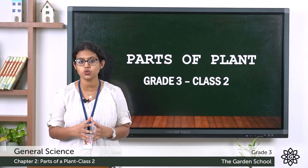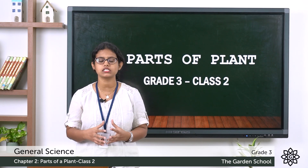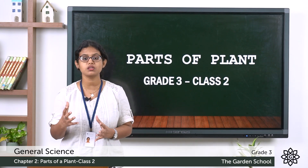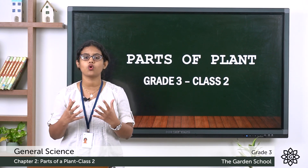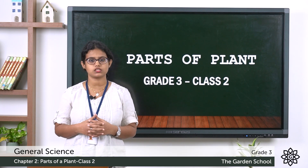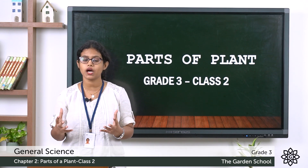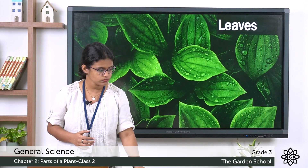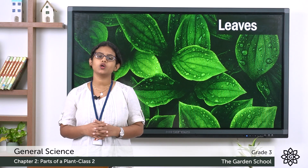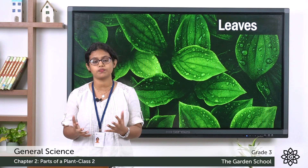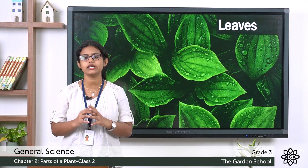The main function of the root is that it holds the plant firmly to the soil and gets water and minerals from the soil. The main function of the stem is that it erects the plant and carries water and food to all parts of the plant. Today we are going to see the next part of the plant — the leaves.